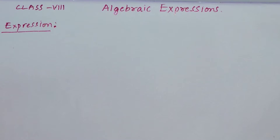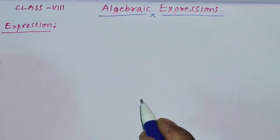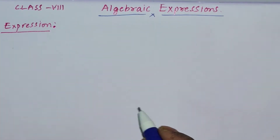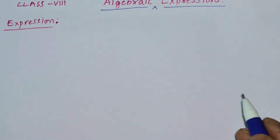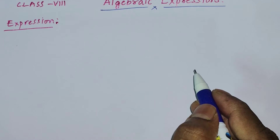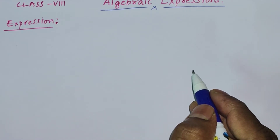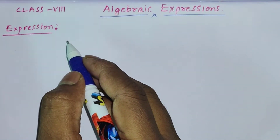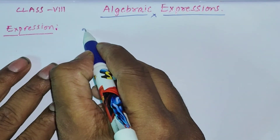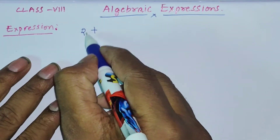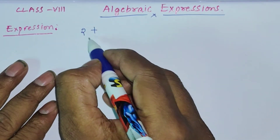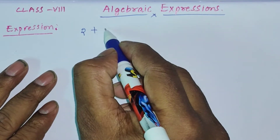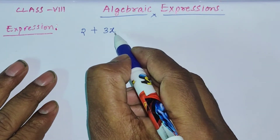Today we are going to learn about algebraic expressions — eighth class mathematics. An expression is a mathematical phrase that combines numbers and variables using some mathematical operations. For example, in this expression you find numbers: I have written 2, which is a number, and using the operator plus I am writing another term 3x.